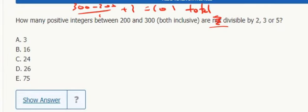So first of all, we have to get the multiples of 2. The greatest is 300, my least is 200, over 2 plus 1 gives me 51.